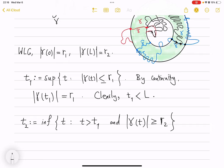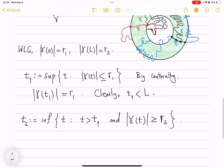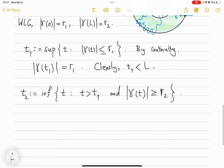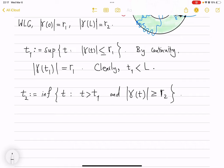Again, they are all equivalent. And then we see that this is a non-empty set. So, and then infimum is defined. And again, by continuity, we see that gamma of t2 itself belongs, I mean, has modulus equal to, has norm equal to r2. And we also see that t2 is definitely strictly bigger than t1.